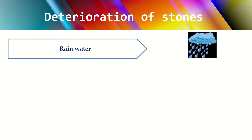Rain water also creates a chemical effect. As rain water descends through the atmosphere, it absorbs gases like carbon dioxide and hydrogen sulfide, as well as other harmful gases present in the atmosphere. It then condenses and falls as rain. These rain particles carry the absorbed gases, and when they fall on the stones, they affect and cause decaying — this is the chemical action of rain water.